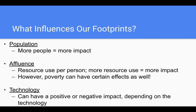Our footprints are determined by three things, and here we're talking about a country's footprint. Population is going to be important — the more people you have, the more impact that country is going to have. Affluence is important as well — how much resources a population uses. If a population has more affluence, they're going to use more. It's also important to realize that poverty can have negative environmental impacts too. Technology can go either way — some things have a positive impact on the environment, some a negative impact. This is called the IPAT model: the impact of our footprint is equal to Population times Affluence times Technology.